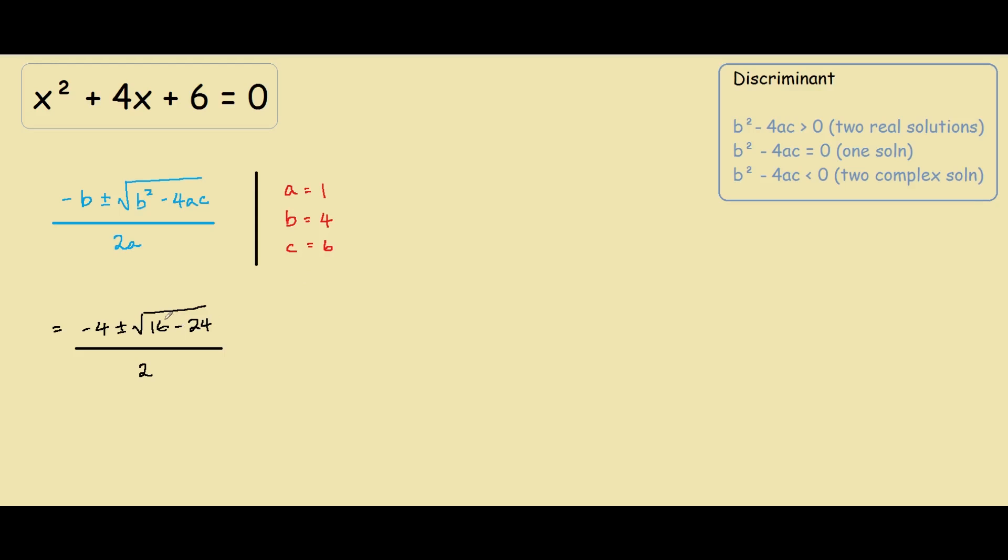So guys, this part over here, the b squared minus 4ac, as you can see here, it's called the discriminant, and because it's negative 8, 16 minus 24 is negative 8, it's less than 0. So we will have two complex solutions.